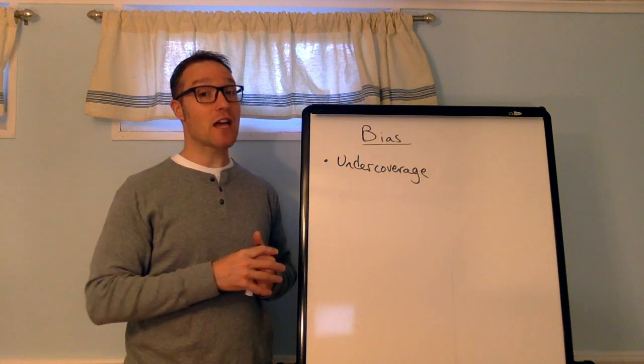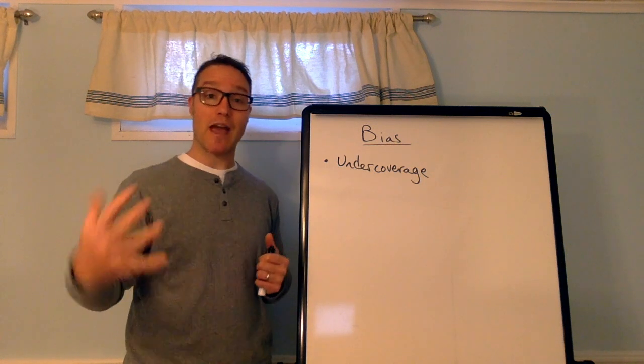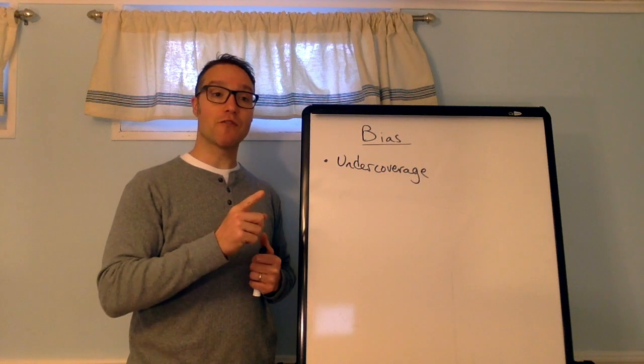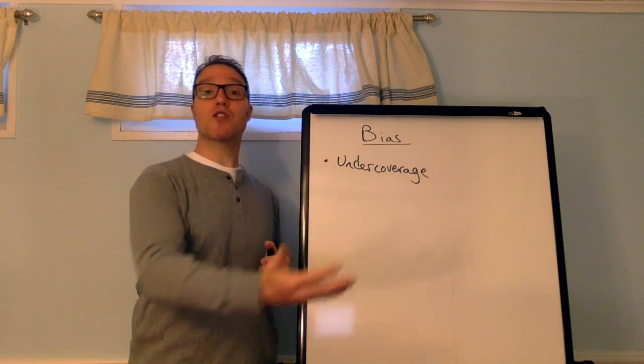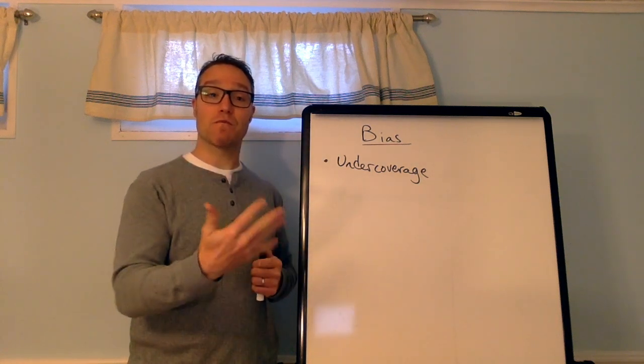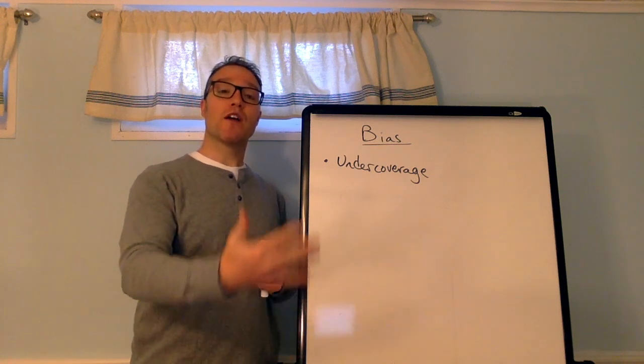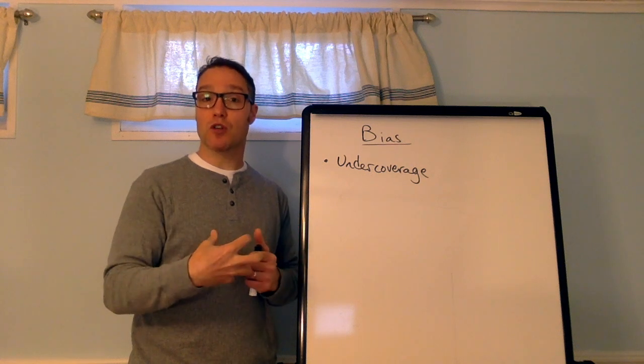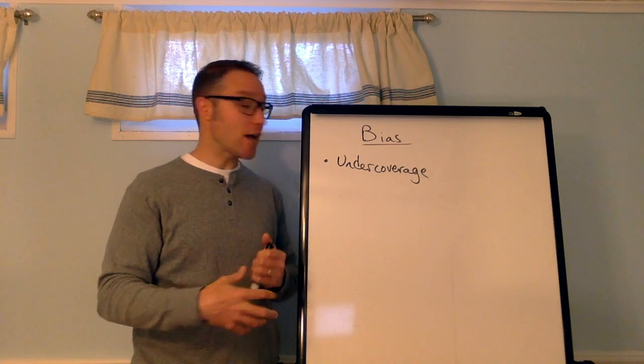That would also be an example of voluntary response, by the way, if I'm asking them for their feedback. So, that's got two types of bias. But, undercoverage would be you post a question on a platform that not everybody has. So, you're not collecting data from certain members of the population. So, your sample would not represent the entire population. It would really only represent that smaller group that uses Facebook.